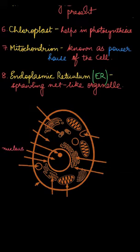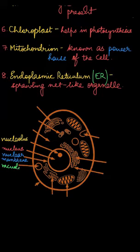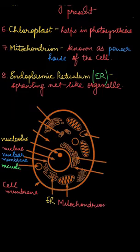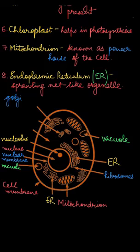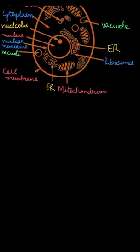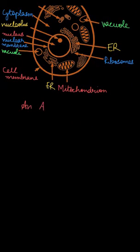Let us see the diagram of the animal cell. In the diagram, you can see various components present in the cell: nucleus, nuclear membrane, nucleolus, cell membrane or plasma membrane, endoplasmic reticulum, mitochondria, ribosomes, vacuole, and golgi bodies.